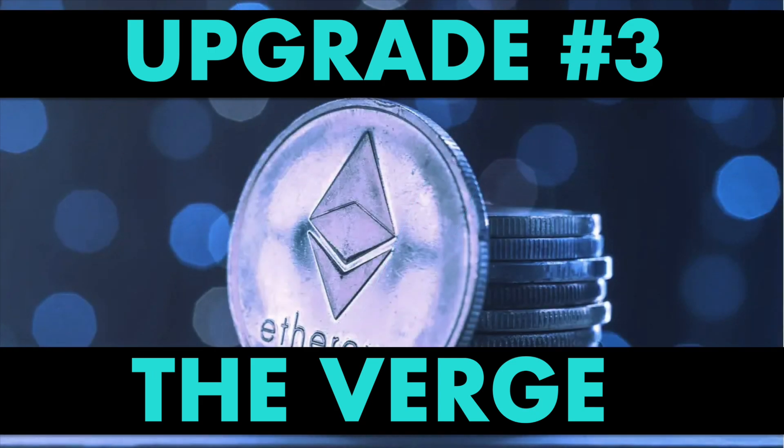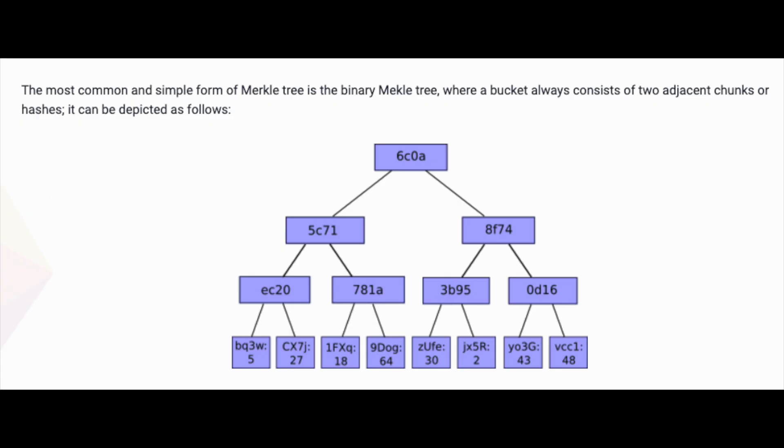Things get a little more complicated with the next upgrade, called The Verge. This upgrade is where Merkle trees get converted into Verkle trees, with a V. Currently, Ethereum stores its entire database inside of Merkle trees. These are hash trees that allow you to quickly find and verify the data you are looking for, by comparing the leaf nodes' hashes.